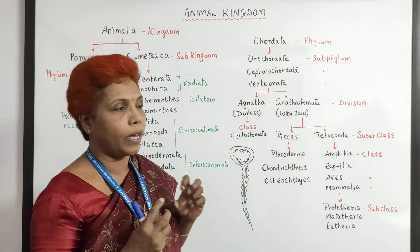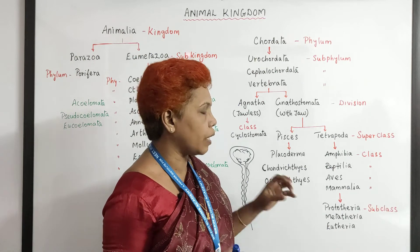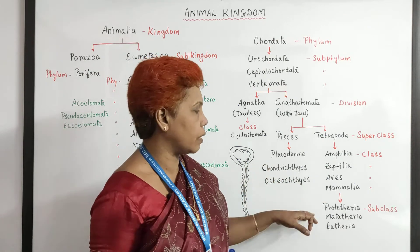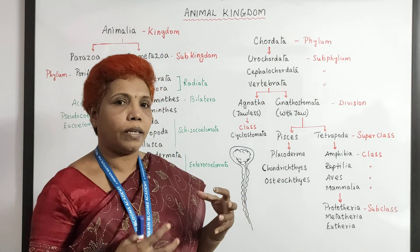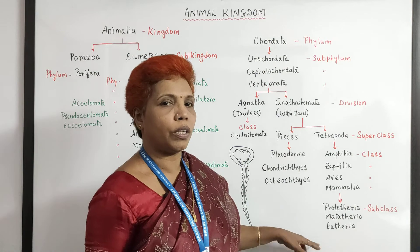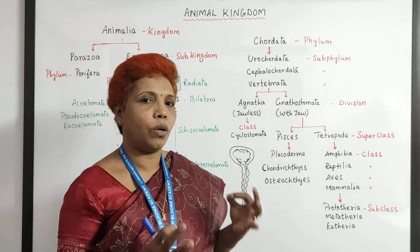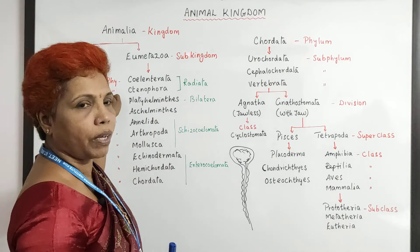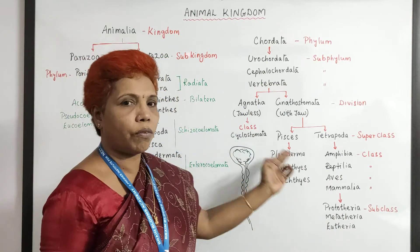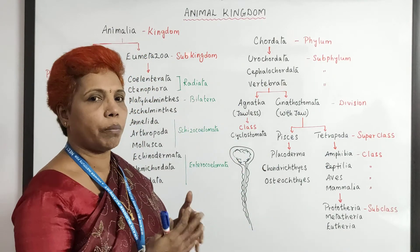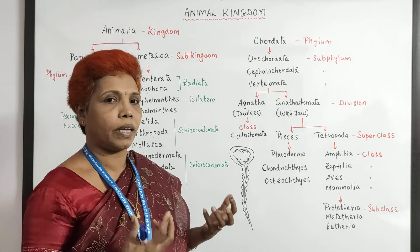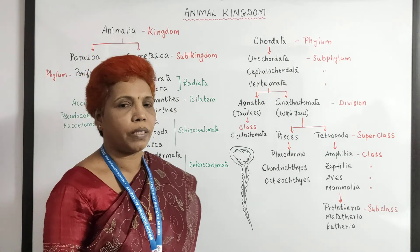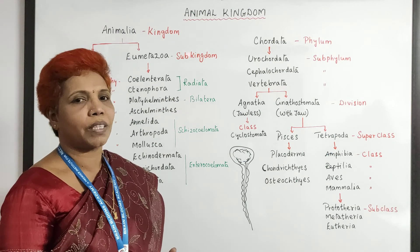Prototheria are egg-laying mammals — a very primitive type retaining the quality of reptilians. Metatheria have a pouch — marsupials like kangaroos. Eutheria are the truly placental mammals, where the baby is fully developed inside before delivery. Compared to Porifera, we have been trailing all the way in evolution, classifying the animal kingdom through symmetry, coelom, and cell aggregation. If you have any doubts, please put them in the comment section, share and subscribe. Thank you.